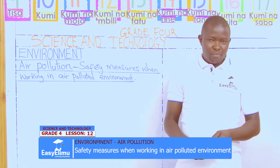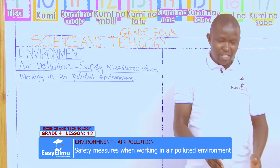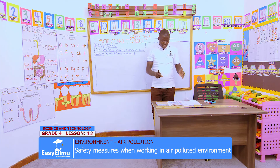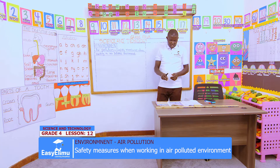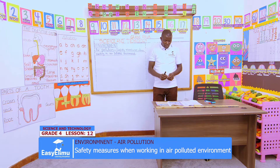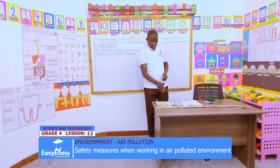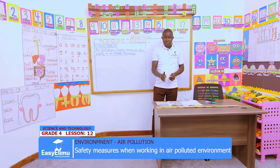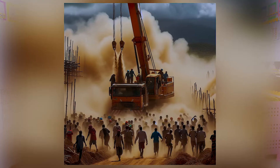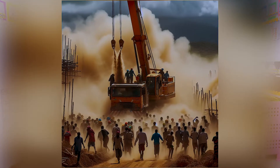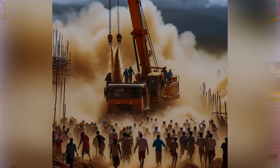Before we continue, I want us to check at the pictures in our books in pairs. Kindly check the pictures in your book — we have several pictures there. The first picture, what can you say John is happening there? People working in a building site which is releasing dust to the air. That is correct.